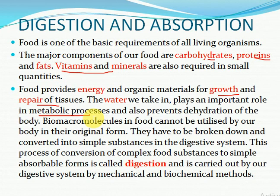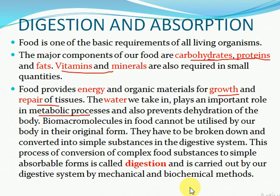Water consumed plays an important role in metabolic processes and can prevent dehydration. Metabolic processes mean the chemical reactions occurring in the body. What we consume in food are the bio-macromolecules — carbohydrates, proteins, and fats. These bio-macromolecules cannot be absorbed by our body in their original form; they need to be broken down. Biomacromolecules in food cannot be utilized by our body in their original form; they have to be converted into simple substances in the digestive system. This process of conversion is called digestion.